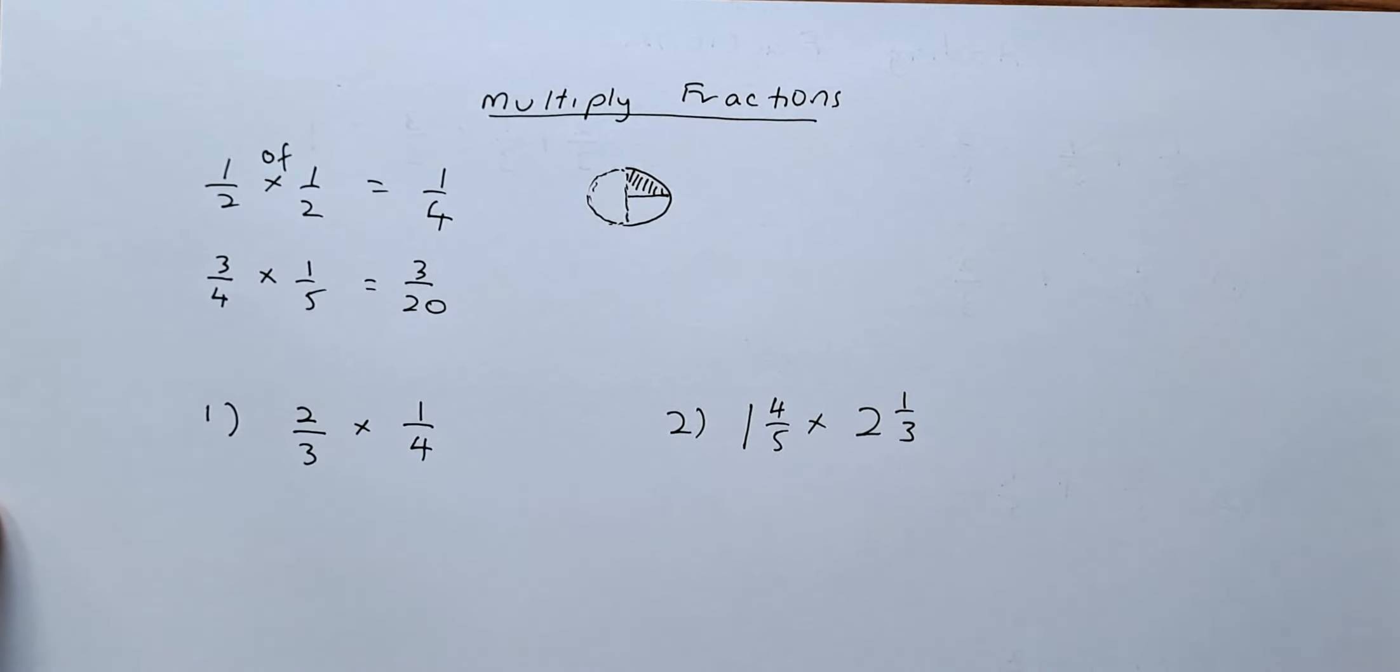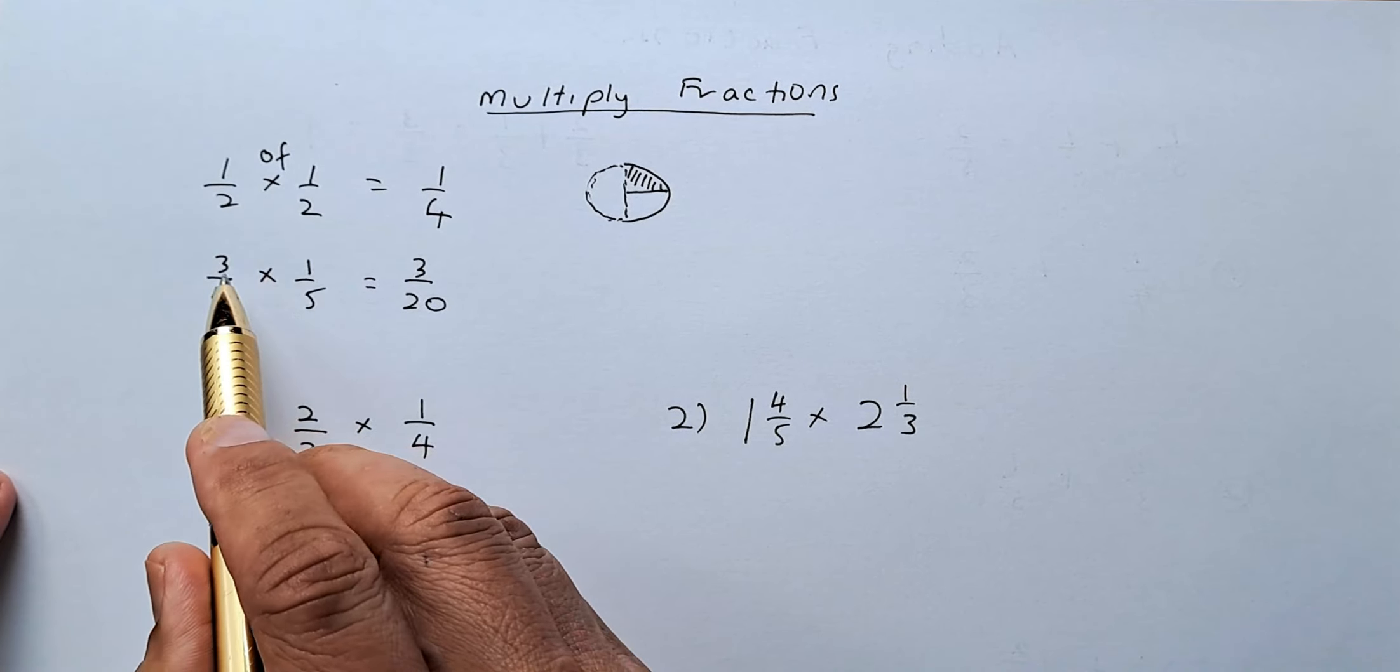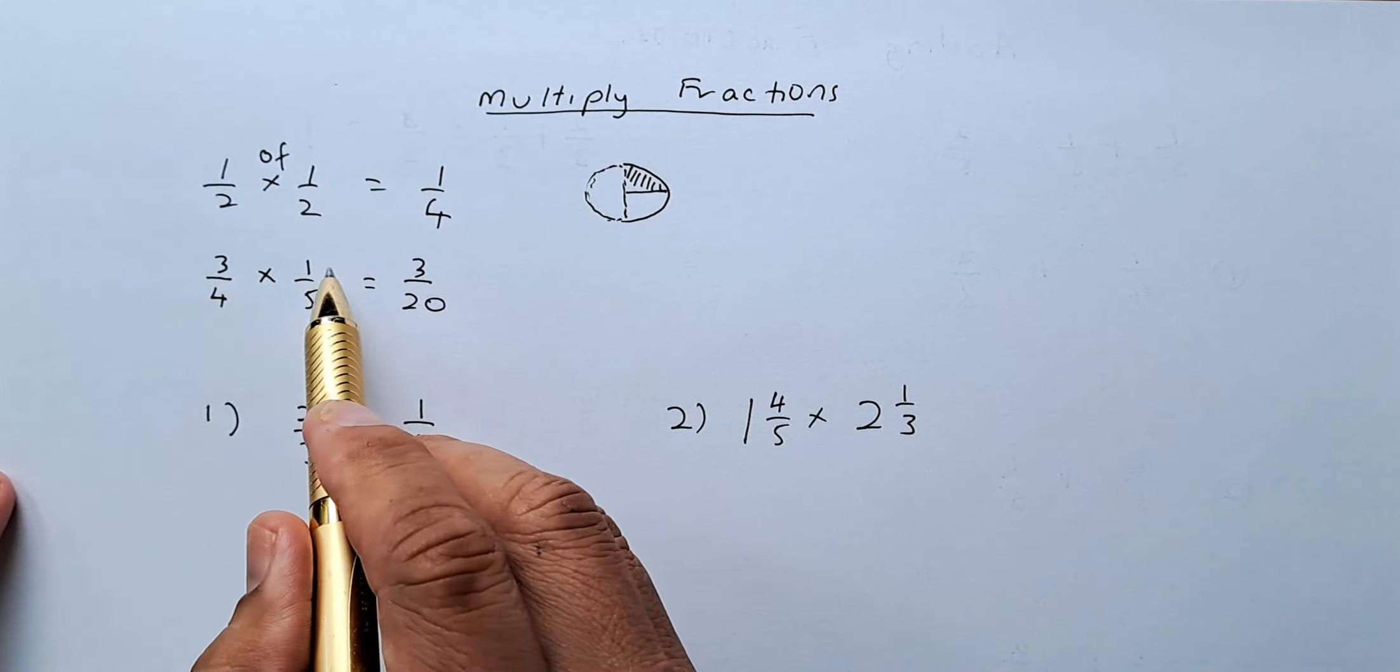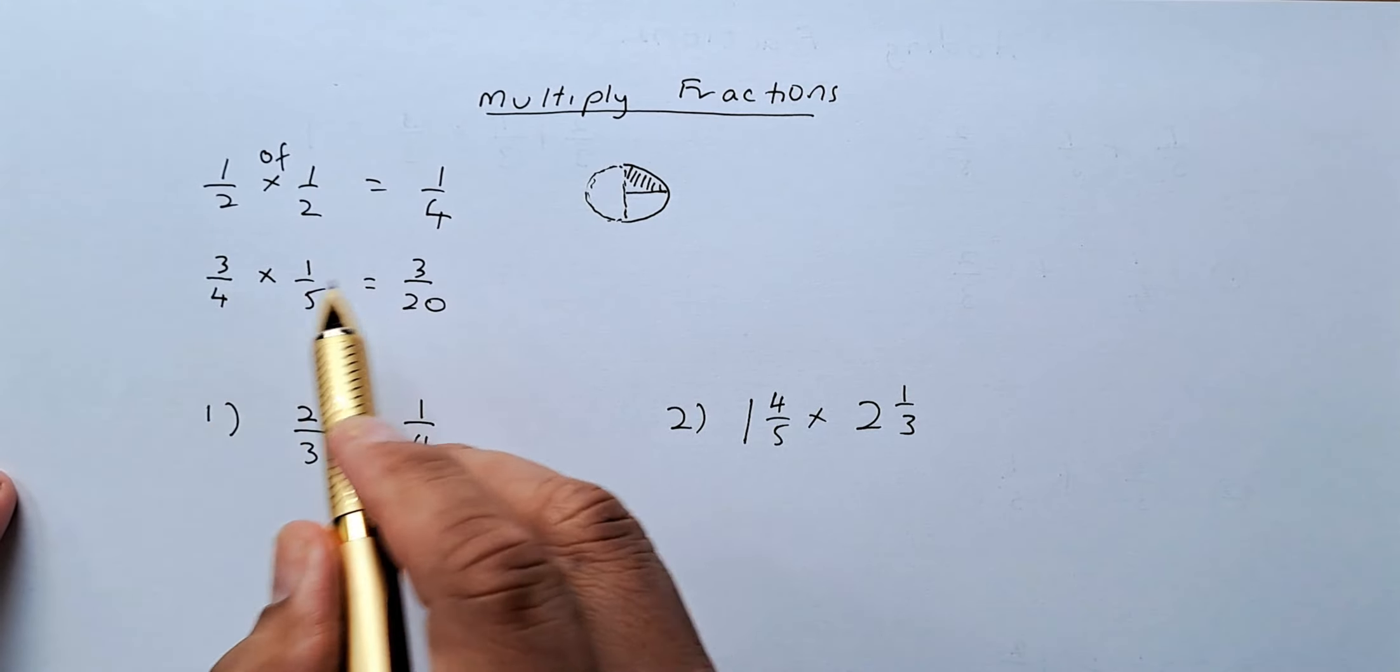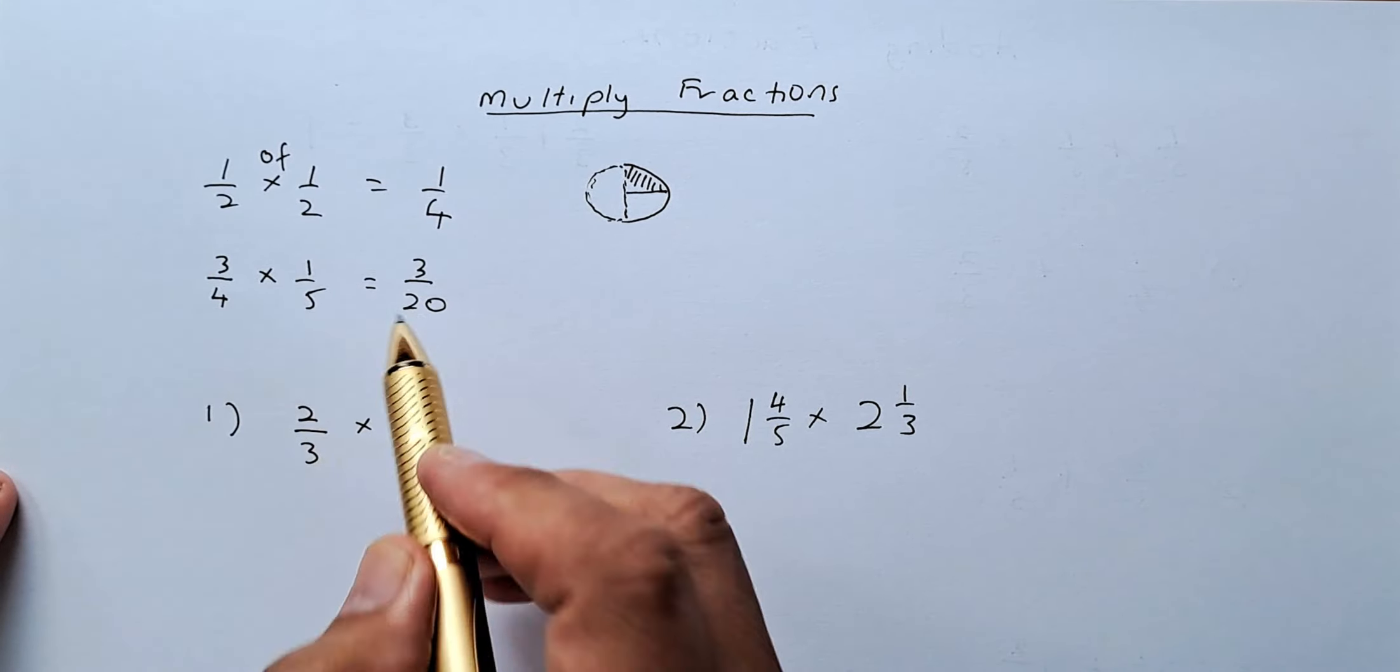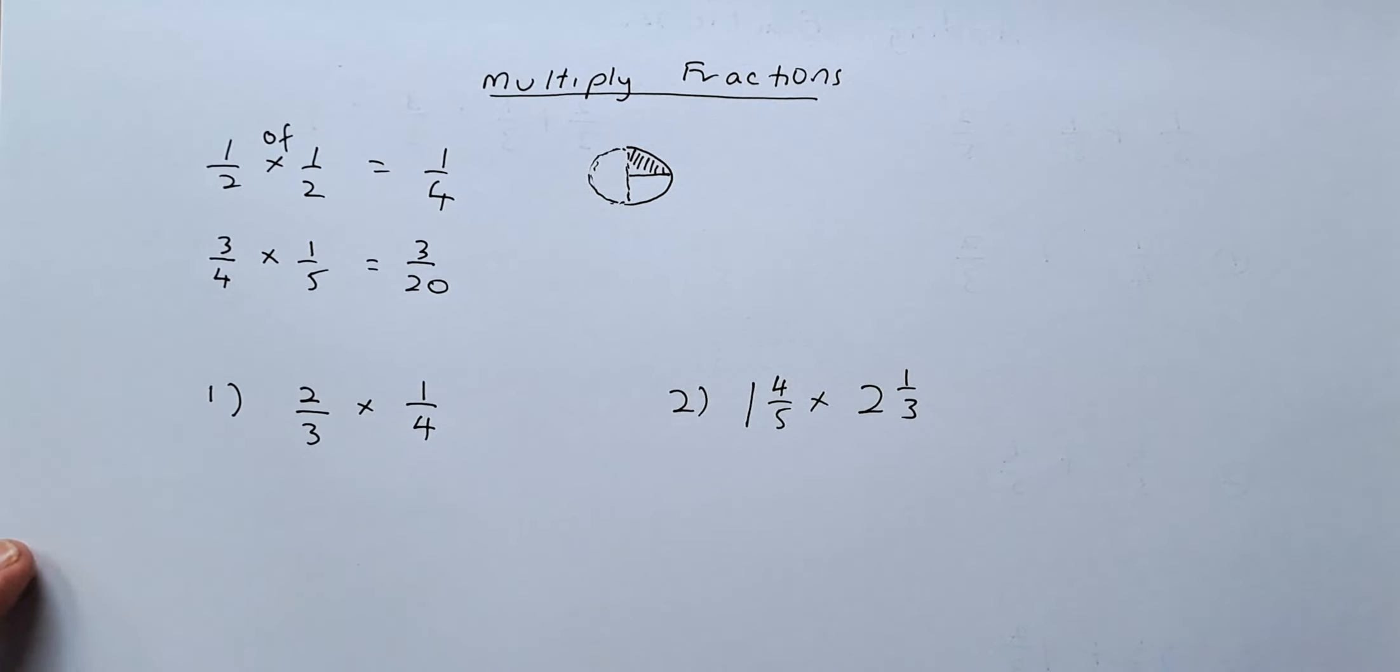So what we do in the multiplication is simple. You just multiply the numerator with numerators and then the denominator with denominators. So 3 times 1 is 3, 4 times 5 is 20. That's as simple as that. This is one of the simplest things in maths.